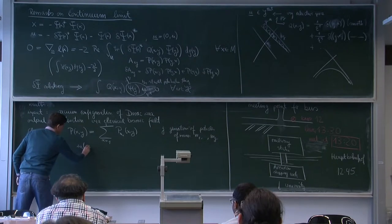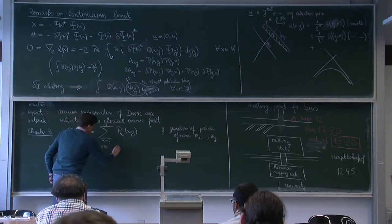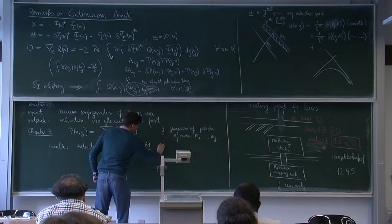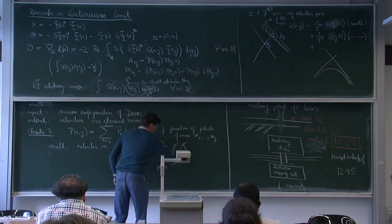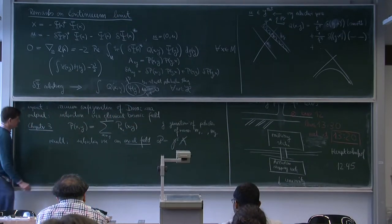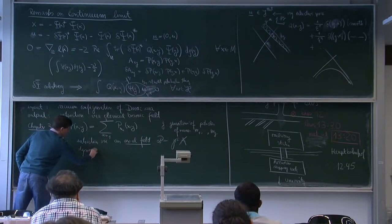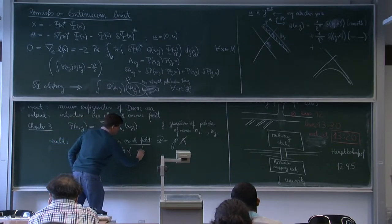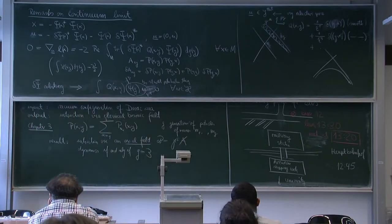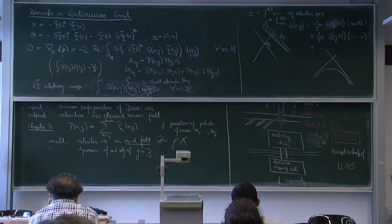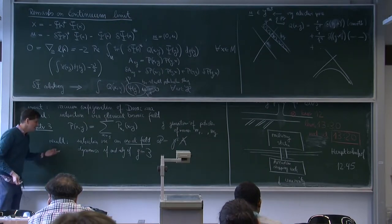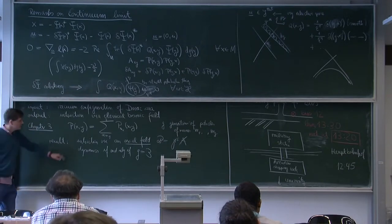The result is that the classical bosonic field involves an interaction via an axial field, meaning B has the form gamma-5 times A-slash. Moreover, one sees that there is dynamics if and only if g equals 3 — one needs exactly three generations of particles. By dynamics I mean there are solutions other than just the vacuum configuration, and the initial value problem should be well posed.